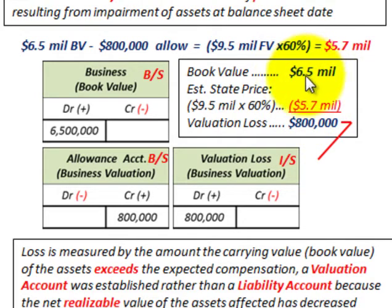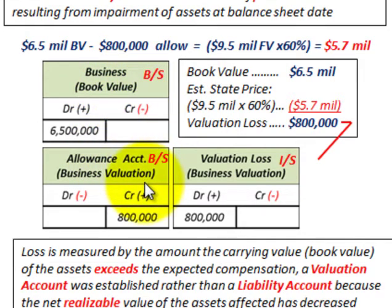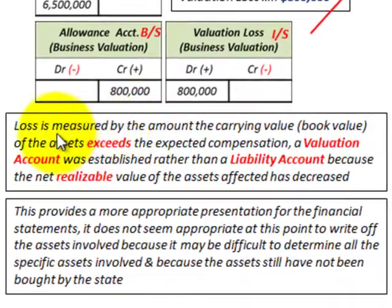Taking the book value of $6.5 million and subtracting the $5.7 million estimated payment, we get a loss of $800,000, because they're going to receive less than the carrying value. So we set up the allowance account as a contra account to the business's book value, credit the allowance account for $800,000, and debit the valuation loss on the income statement for $800,000.